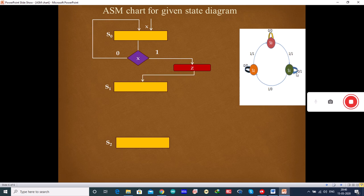Now, in S1, if input is 0 and output is 1, means first you will draw the decision box and when the input is 0, you need to draw a condition box. Here you have drawn the condition box. So, it will go to S1 only.